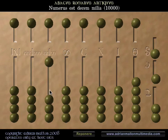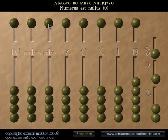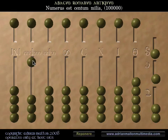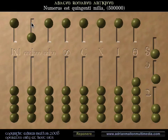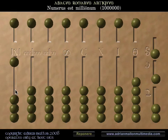Decem milia? Ten thousand. Quinquaginta milia? Fifty thousand. Centum milia? One hundred thousand. Quingentimilia? Five hundred thousand. Milionum? One million.